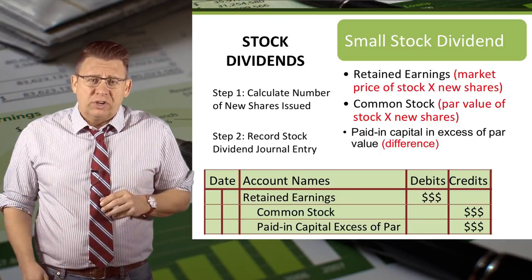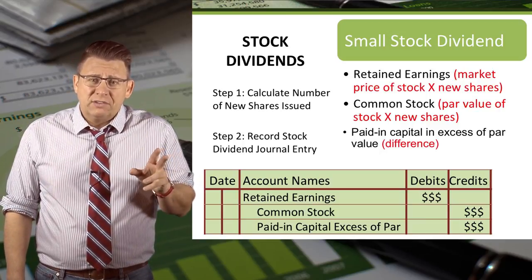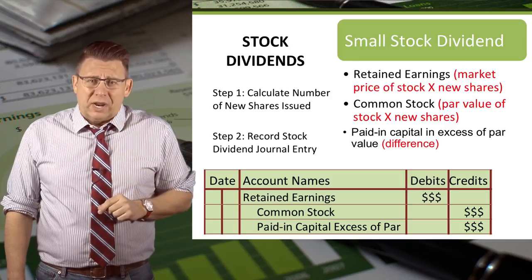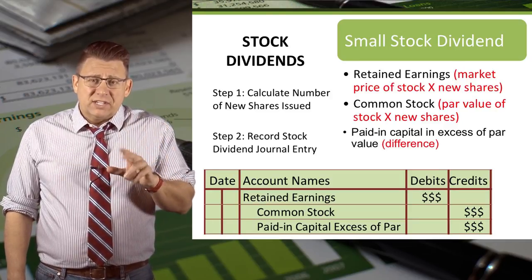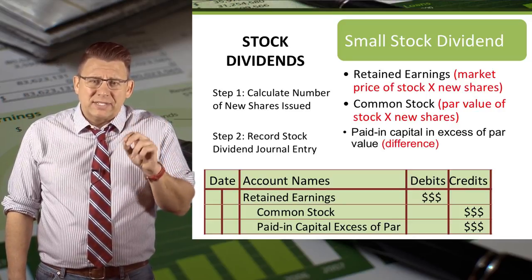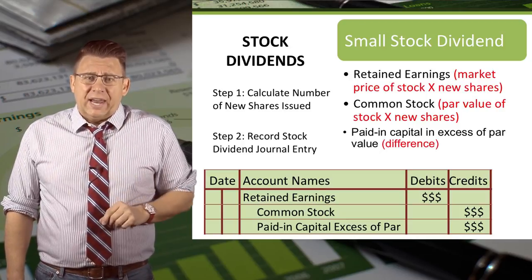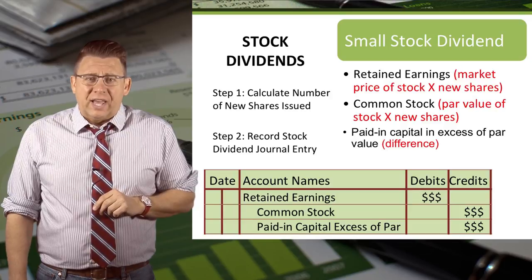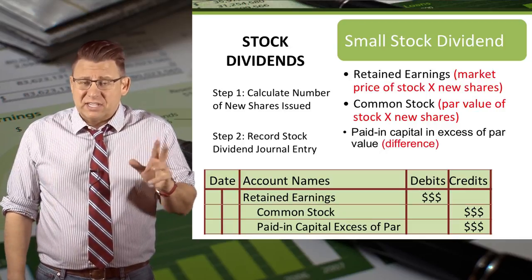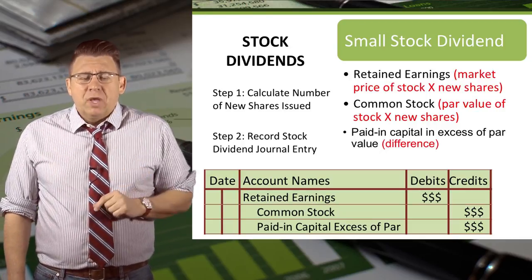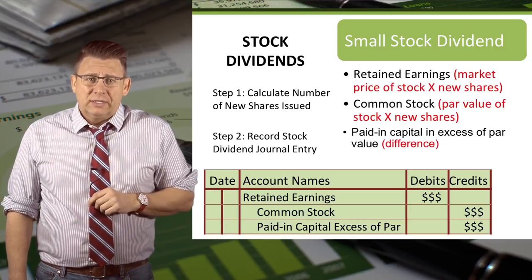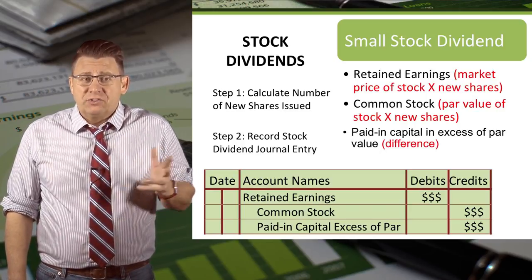The journal entry to record the distribution of the new shares is a debit to retained earnings. The amount of this debit is the number of new shares times the market price. Common stock is then credited. Note that sometimes companies use an account called common stock distributable — if your course uses that, review an example in your text because there's one extra journal entry you'll need to make. Common stock is credited for the number of new shares times the par value of the stock. Finally, paid-in capital in excess of par is credited for the difference.